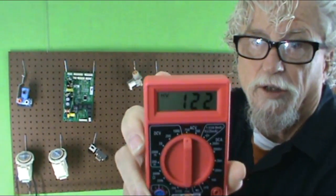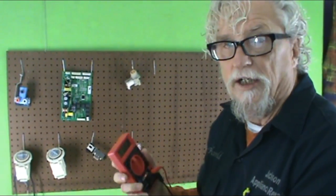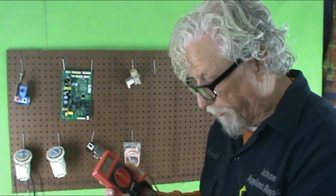122 volts. So that's how you set it up to test voltage from a wall outlet.